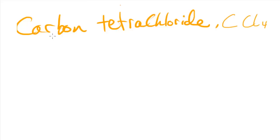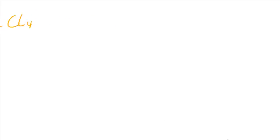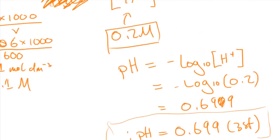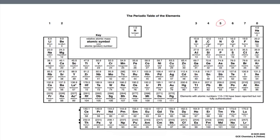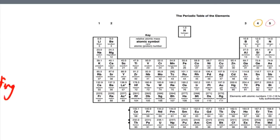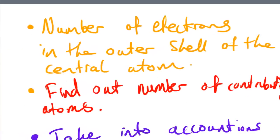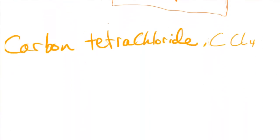So we've got CCl₄ — carbon tetrachloride — with four chlorine atoms. The first thing we need to do, as before, is find out the number of electrons in the outer shell of the central atom. In this case the central atom is carbon. Looking at the periodic table, carbon is in group 4, so there are going to be 4 electrons in the outer shell.